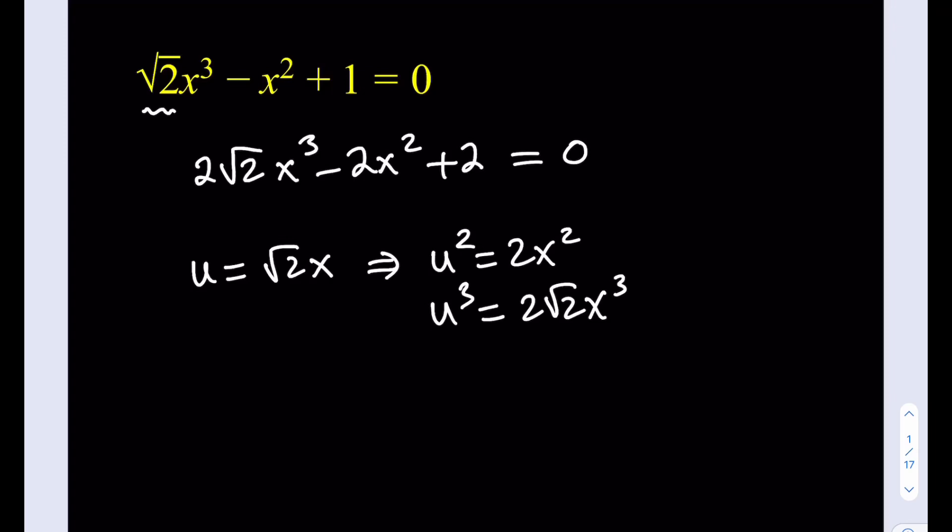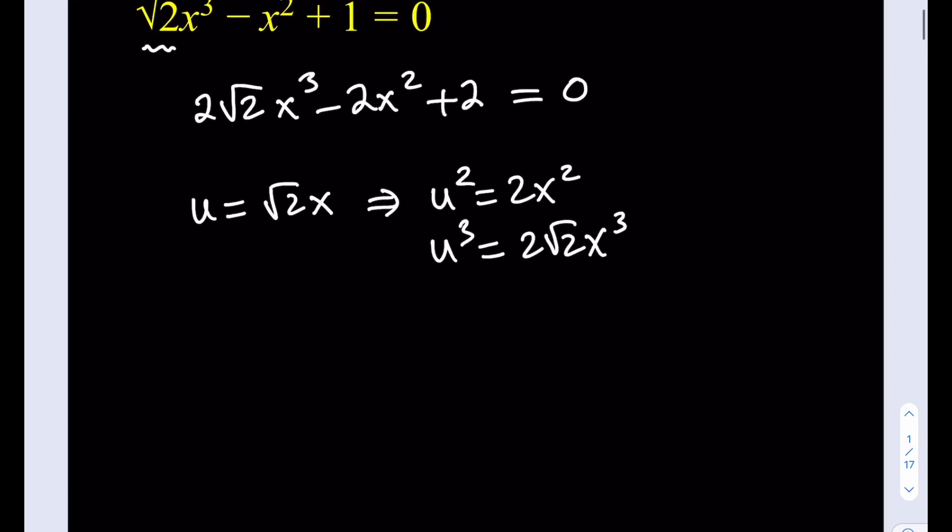Awesome. This is pretty good because now I can just substitute and solve this equation in a much easier way. Let's go ahead and proceed. So I'm going to replace 2 root 2x cubed with u cubed. 2x squared is automatically u squared. So that's nice. Plus 2, the constant is just going to stay.